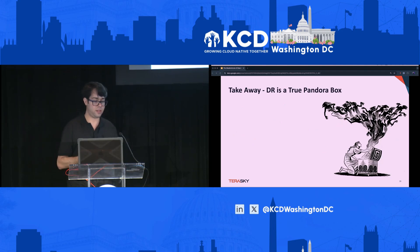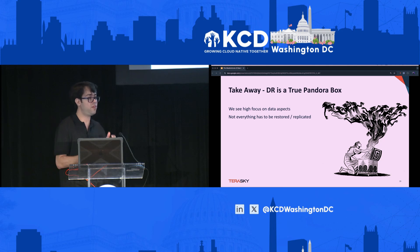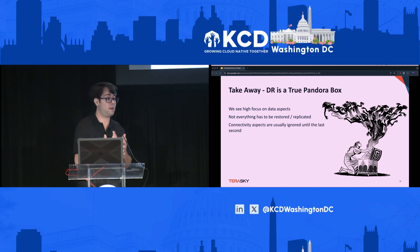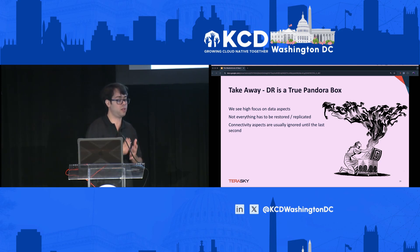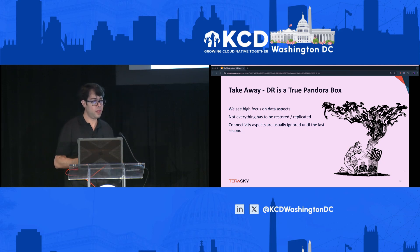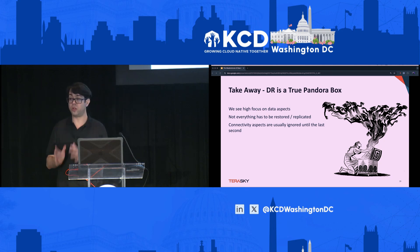The main takeaway is that DR is a true Pandora's box. Companies mostly focus only on data — they think disaster recovery is just about backing up persistent volume claims. That's not the case. Not everything needs to be restored or replicated. Sometimes etcd, which companies obsessively want to back up, doesn't need to be backed up at all. And because DR is mostly done theoretically, connectivity — one of the most important aspects — is often ignored until the last minute.